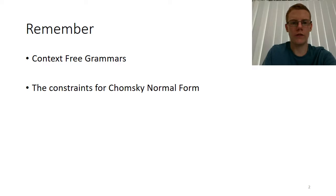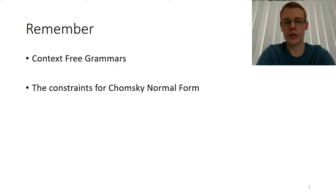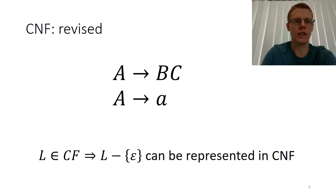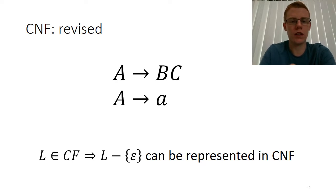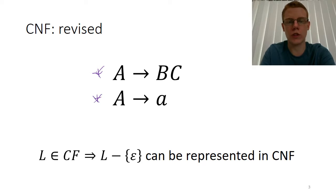It would be good to know context-free grammars beforehand, and also the constraints for Chomsky normal form, however I will review these right now. A context-free grammar is in Chomsky normal form if all of its productions satisfy one of two constraints: either the right-hand side is two non-terminals, or the right-hand side is just one terminal — something in the string alphabet.